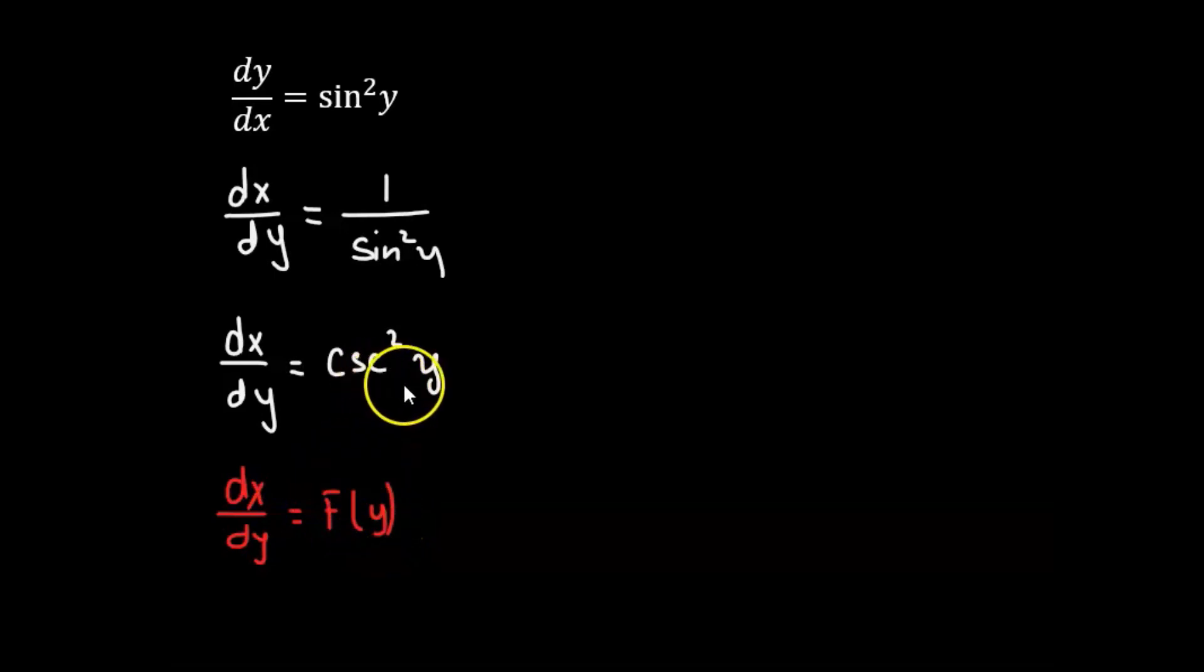And here we can see that cosecant squared y is purely a function of y. Now we can separate the differentials and that will give us dx equals cosecant squared y dy.